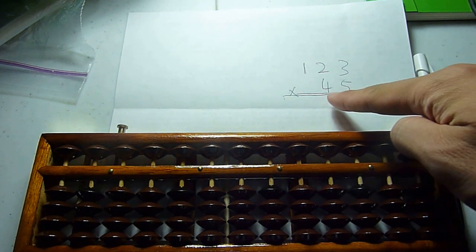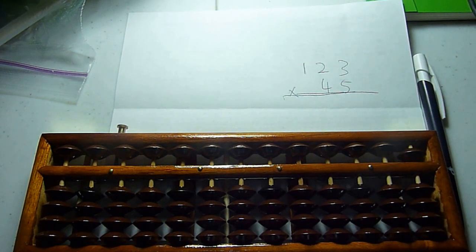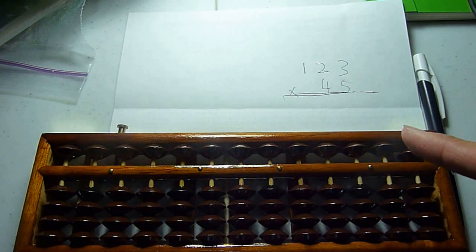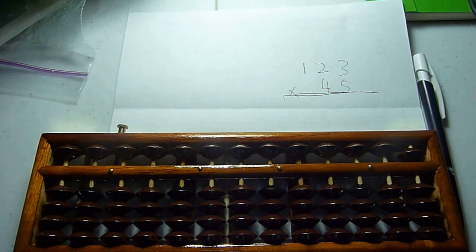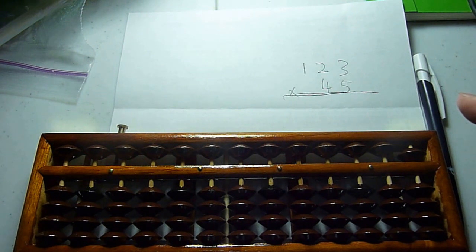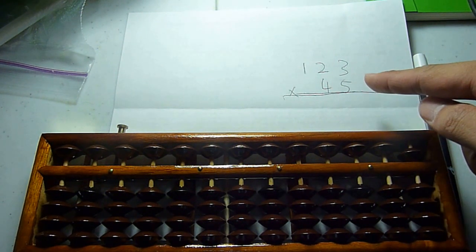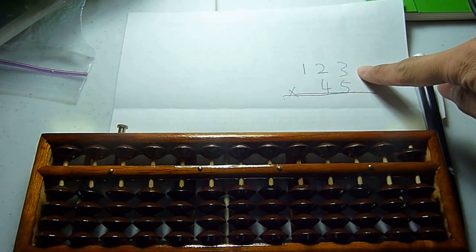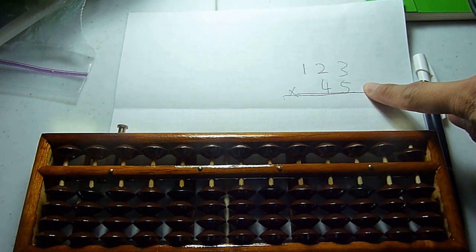For multiplication, in this case, when you do this, you need to count up the number of digits the product, the result of the multiplication, is going to be. So in this case, we have a three-digit number multiplying a two-digit number.